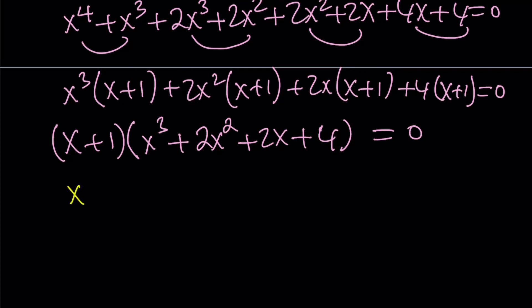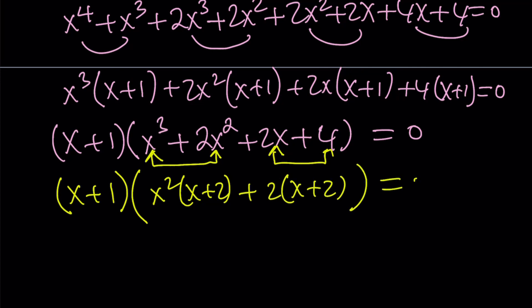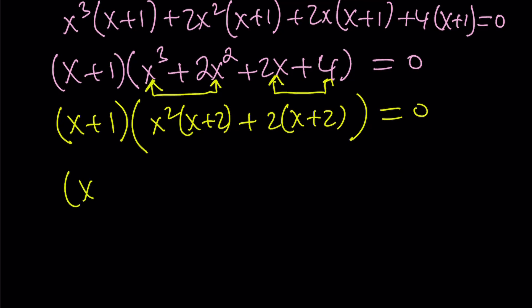So, how do you factor it? You can just go ahead and notice that these two terms have a common factor, and these two terms have a common factor, and those, one of the common factors happen to be the same thing. So, now we get x squared multiplied by x plus 2 plus 2 times x plus 2. So, x plus 2 is a common factor, and we can go ahead and take it out, and we end up with a really nice result.